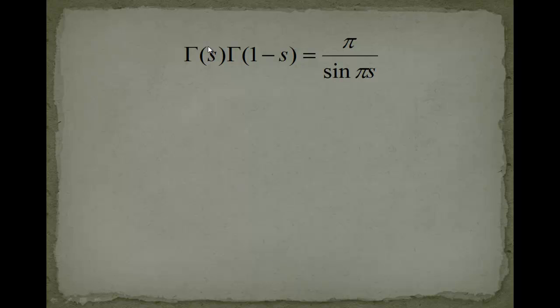Now what we do is, as we search the value of s equals 1 half, we just plug it in. We plug in gamma of 1 half, gamma of 1 minus 1 half is equal to pi over sin of pi half.